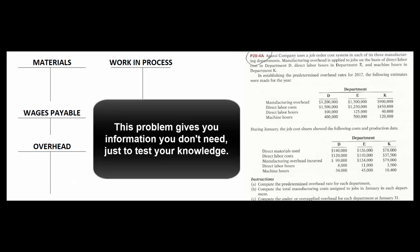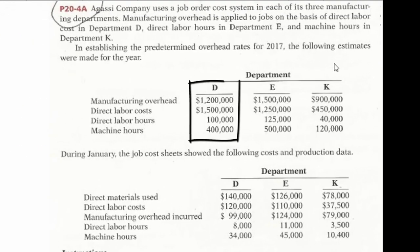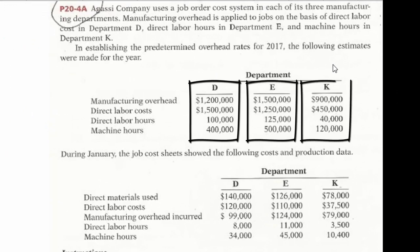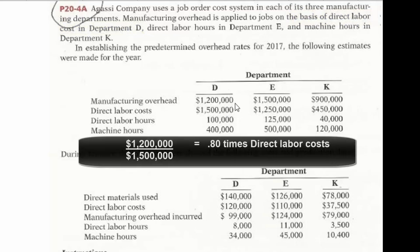Let's look at this problem — it gives you a lot of information you don't really need. Agassi Company has three different departments, each with a different overhead application rate. Department D uses direct labor cost. Our total manufacturing overhead is $1,200,000 and our total estimated direct labor cost for the year is $1,500,000.